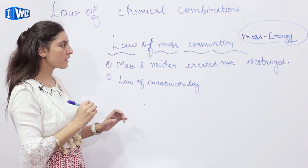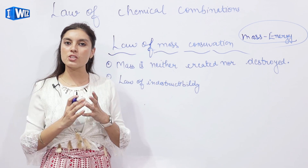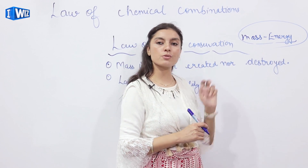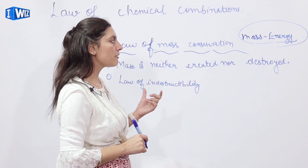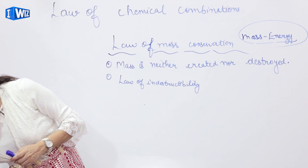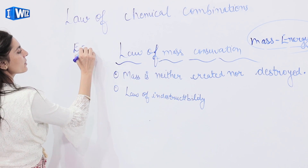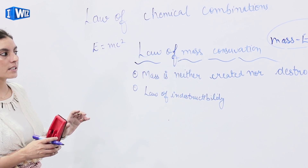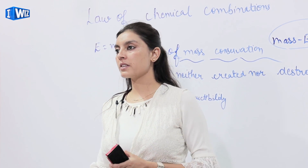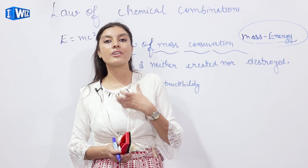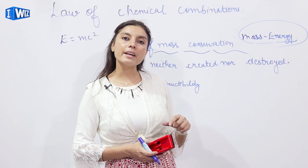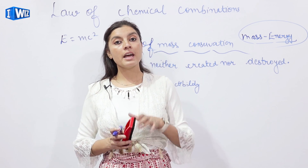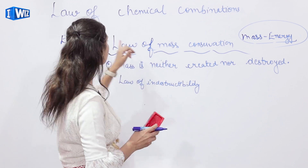Mass-energy conservation means that if there is a change in the mass of the reactants combining to give a product, that particular mass may have converted to energy. This concept comes from Einstein's theory of relativity: E = mc². Whenever a chemical combination takes place between two reactants to give a product, there is always a release or absorption of energy. If the weights of reactants are not equivalent to that of the product, it means mass may have converted to energy.